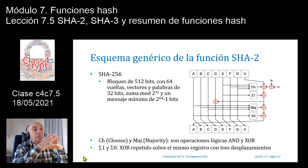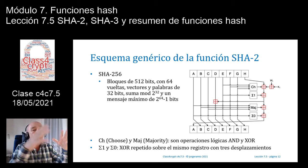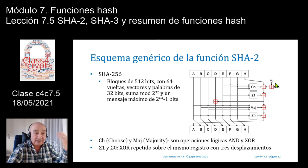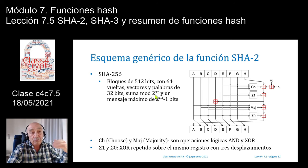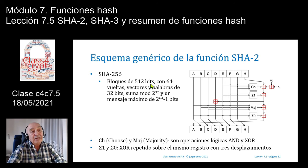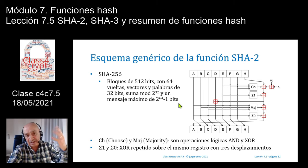Para SHA256 se trabaja con bloques de 512 bits y 64 vueltas. Los vectores y palabras internos en cada operación son de 32 bits. Las sumas se hacen en módulo 2 elevado a 32. Se reservan las últimas dos palabras de 32 bits del último bloque para indicar el tamaño, por lo tanto el mensaje máximo que se puede tratar es de 2 elevado a 64 menos 1 bits, un valor bastante grande.